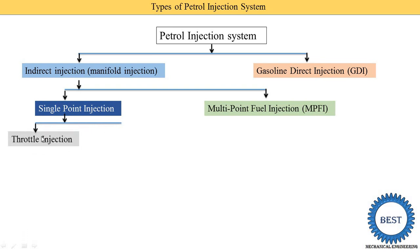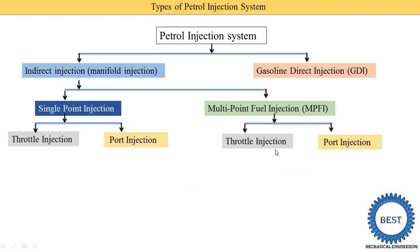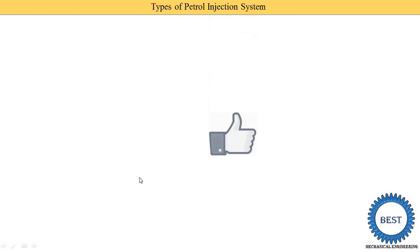Single point injection is further classified into two categories: throat injection and port injection. Multi-point fuel injection is also classified into throat injection and port injection. Apart from this classification, injection systems can also be categorized based on continuous injection and timed injection.